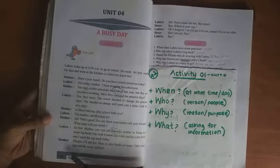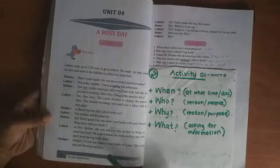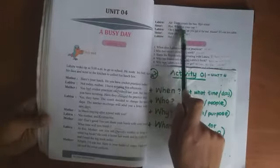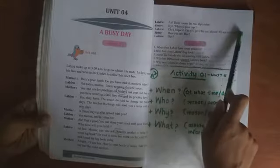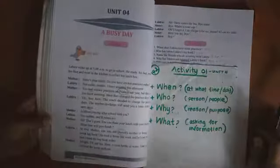All right, I'll ask her. Here is your bottle of water. Take your cap and the scout uniform. So what are the three things that he's taking? Bottle of water, cap, and the uniform. There comes the bus. Bye! Sister, bye! Where is your cap? Oh, I forgot it. Can you get it for me please? It's on my table. Here you are. Bye bye. So he has forgotten to take his cap, and his sister is helping him. Where is it? It is on his table.